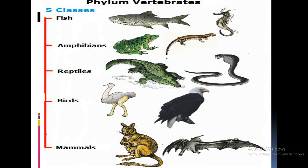Here you can see the five classes. Fishes have gills, pectoral fin, pelvic fin, and tail fin. Amphibians have tympanum, forelimb, and hindlimb — pentadactyl. Then reptiles, then birds, and then mammals. This is an aerial mammal, this is a terrestrial mammal, and this is an aquatic mammal — the whale is an aquatic mammal.